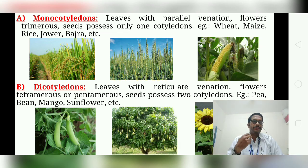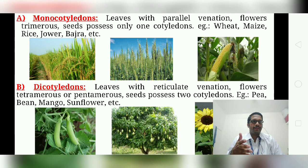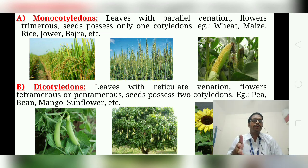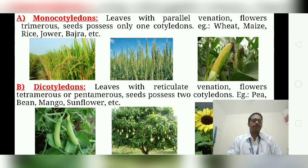Examples of Monocotyledons include wheat, maize, rice, and all grasses — the Poaceae family. Examples of Dicotyledons include pea, bean, mango, and sunflower.